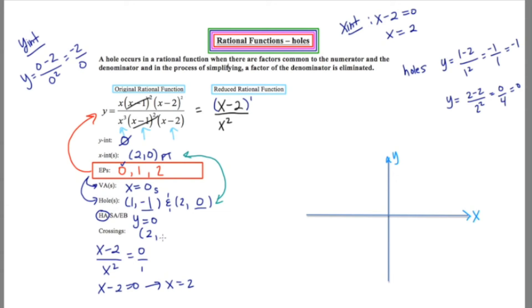So there is a crossing when x equals two. And we might ask ourselves, well, what are we crossing? And we're crossing the HA, which happens at y equals zero. So this point (2, 0) is just something special. It is a crossing. It is a hole. It is also an x-intercept. It's like quite the point.